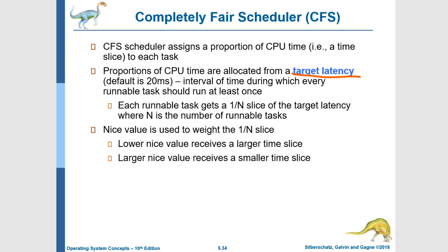Within each latency period — within each 20 milliseconds — not only do we want each task to run once, but we want each task to get a proportional amount of that total time. If all tasks have the same nice value, we would want all of them to get exactly 1/n of the time, where n is the number of tasks. However, because we're assigning different nice values, we're going to weight the proportional amount that each task gets. Tasks with a lower nice value will get a little bit more than 1/n time slice.